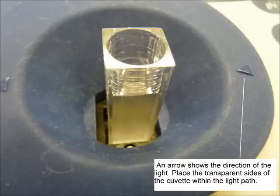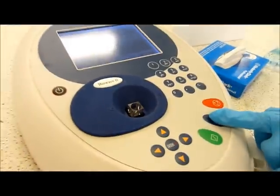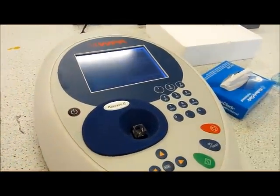Where appropriate, align the arrows on the cuvette with the arrow as indicated on the spectrophotometer. Press the blue button which will make the instrument read zero.